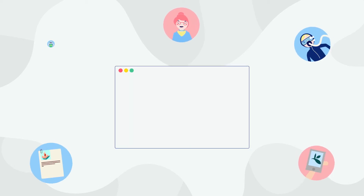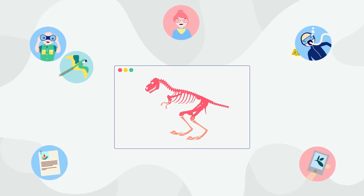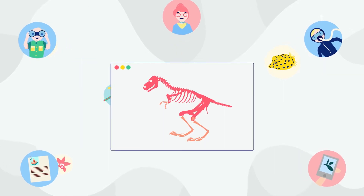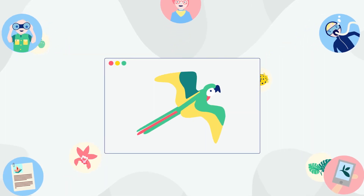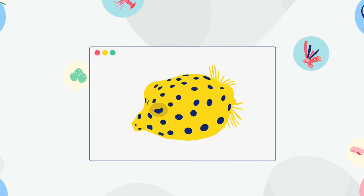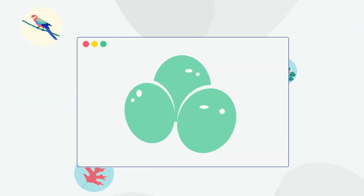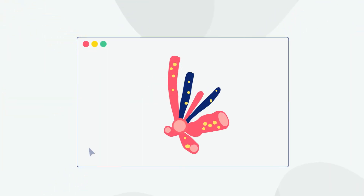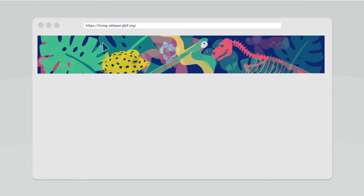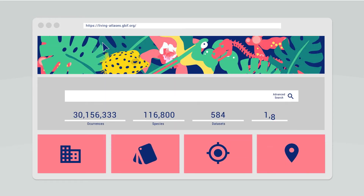A living atlas is an informatics infrastructure that aggregates biodiversity data from multiple sources and makes it freely available and usable online. In this video, we are going to focus on two of its spatial components.